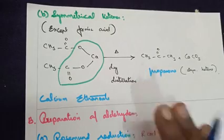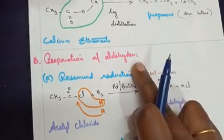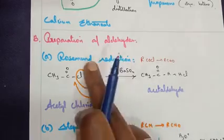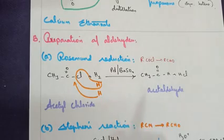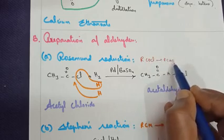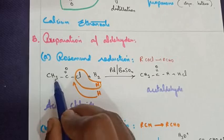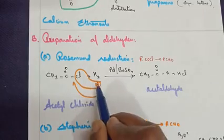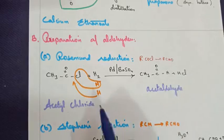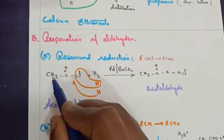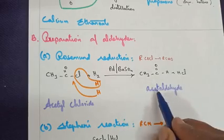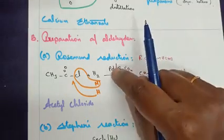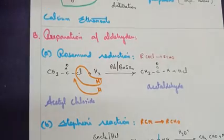Up to here it's the general method of preparation of aldehyde and ketone. From part B, it's a precise method only to prepare aldehyde. The first specific reaction is Rosenmund reduction. The key concept: acetyl chloride is converted into an aldehyde. Acetyl chloride is CH3-C(=O)-Cl. Reduction means addition of hydrogen — two hydrogens added; one hydrogen combines with Cl and goes out as HCl; the other takes the place of Cl, giving CH3-C(=O)-H, which is ethanal (acetaldehyde). This reaction takes place in the presence of palladium and barium sulfate.